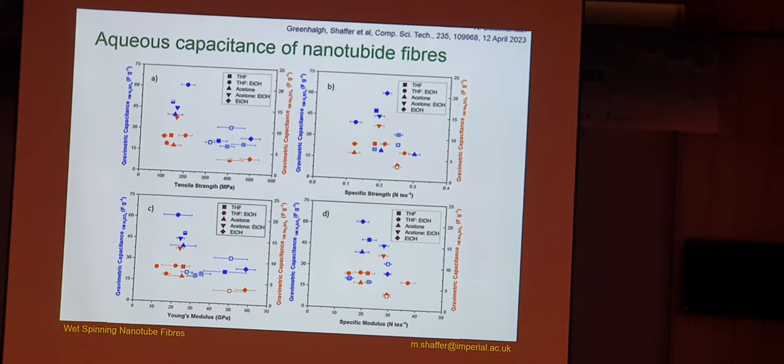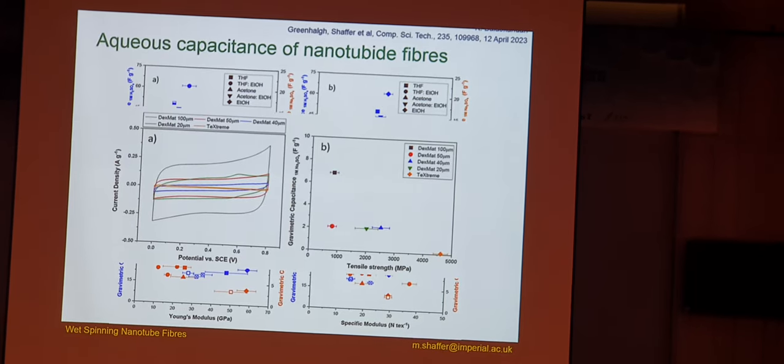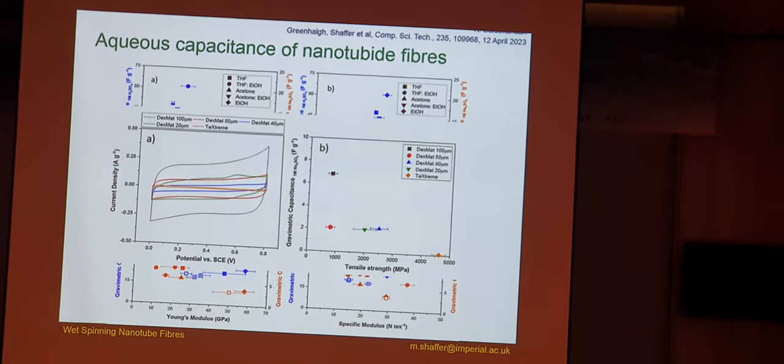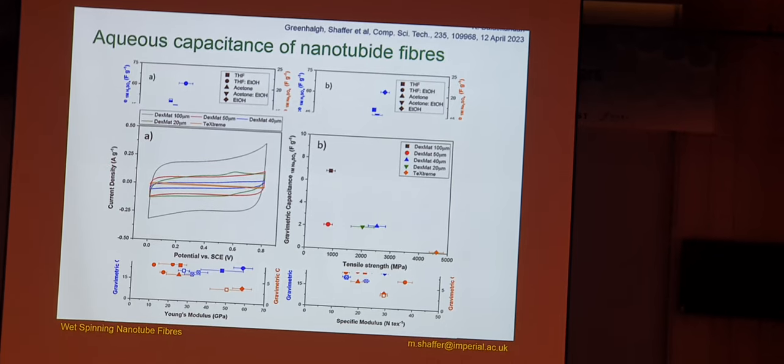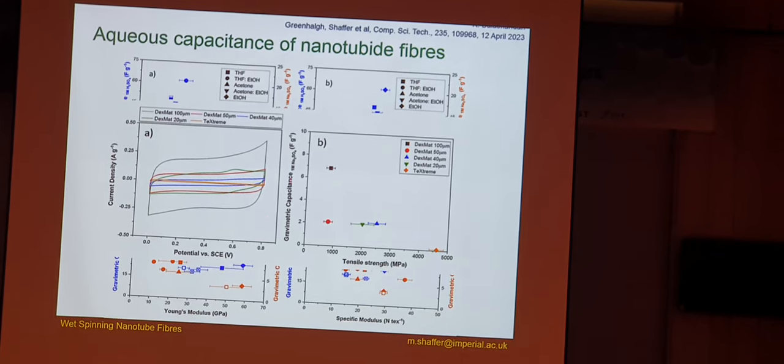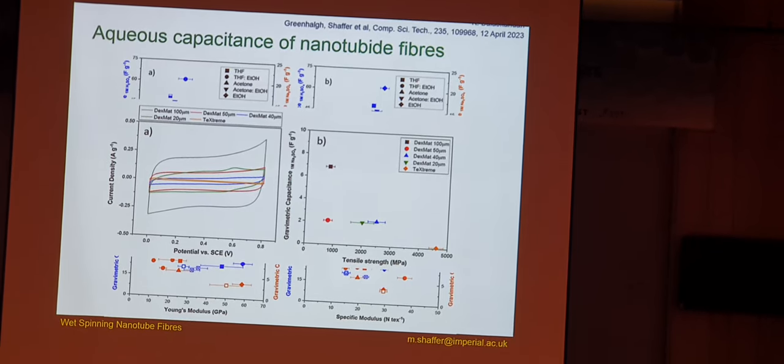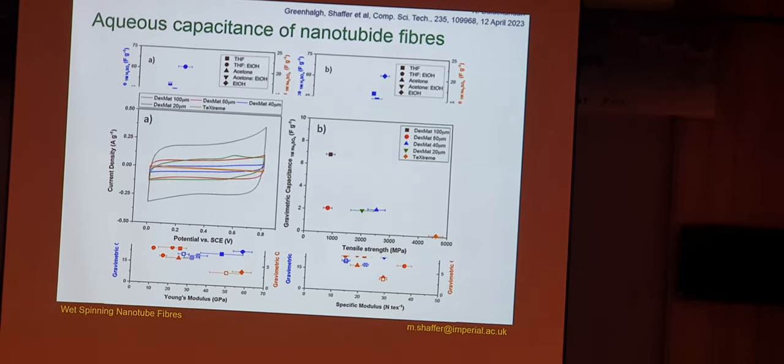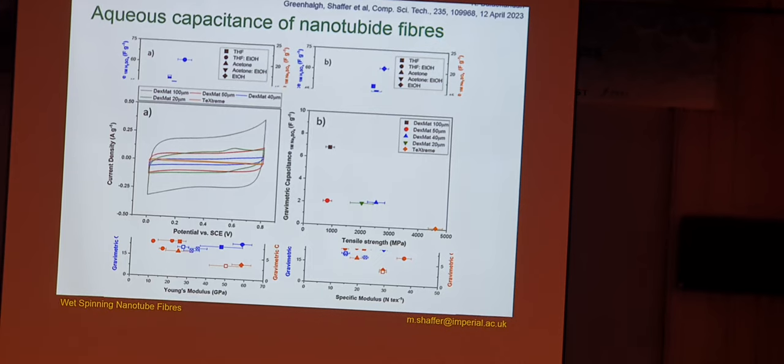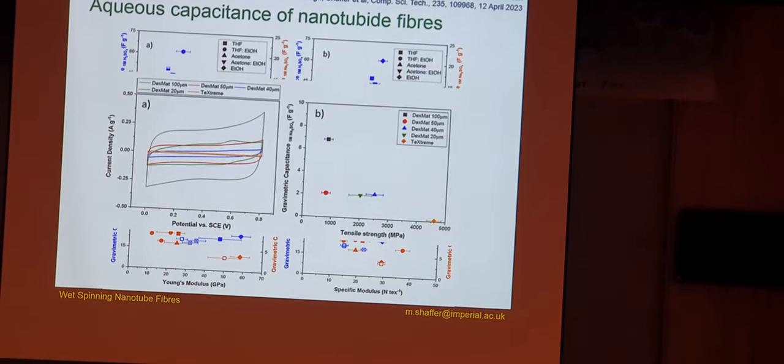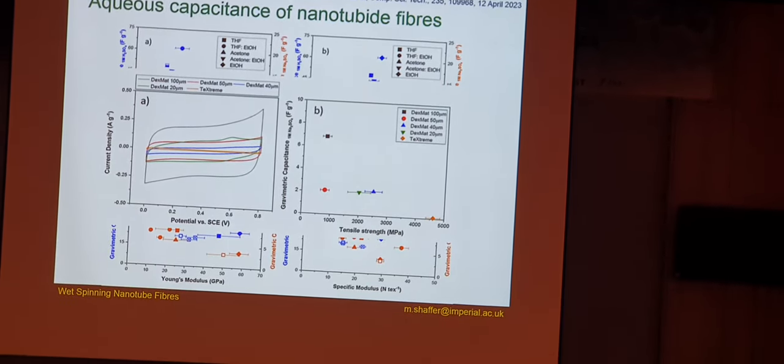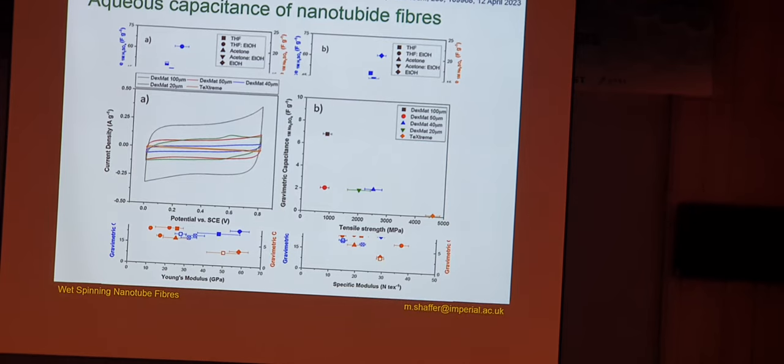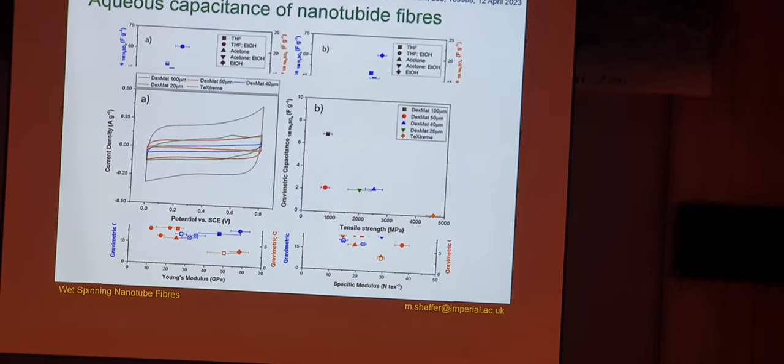Just for a bit of context there, we can compare to Dexmat fibers. Here are some Dexmat fibers, and the measured gravimetric capacitance here, which is an order of magnitude or more lower. So, in this case, the fibers are dense, but there's no access for the electrolyte. So, actually, the capacitance disappears. You sort of have this trade-off between how much porosity you want in order to get your multifunctionality.